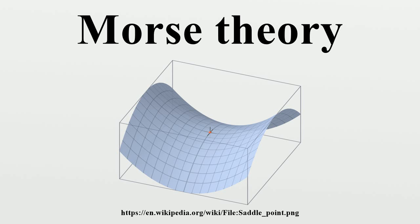Imagine flooding this landscape with water. Then, the region covered by water when the water reaches an elevation of A is F inverse of negative infinity to A. In other words, it does not change except when the water either starts filling a basin, covers a saddle, or submerges a peak.